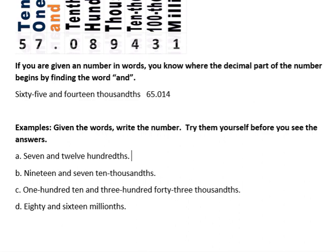So 7 and 12 hundredths, you have 7 and, that's the decimal point, 12 hundredths. Hundredths is two places out, and 12 takes two places, so that's just going to be 7.12.